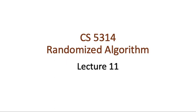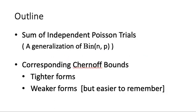Welcome to lecture 11. In this lecture, we will introduce a new type of random variable called the sum of independent Poisson trials. This random variable can be considered as a generalization of the binomial random variable bin(N, P). We will look at the Chernoff bounds corresponding to this random variable — first a tighter form, and then a weaker form, which is easier to remember.